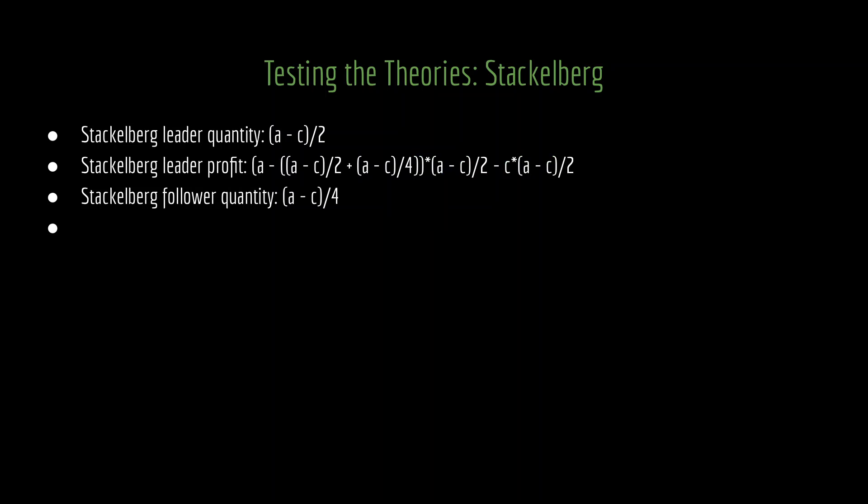If we start calculating profits, we can confirm this. To calculate the leader's profit, we take the sum quantity of production and insert that into the price function, then multiply it by the leader's quantity of production, and subtract its marginal cost times its production. After simplifying, we get (A minus C) squared divided by 8. Indeed, we are seeing the leader doing better — under Cournot, profits for both players were (A minus C) squared divided by 9, and here we are dividing by 8, so the leader is doing better than under Cournot.